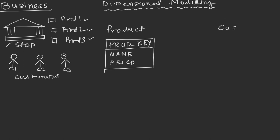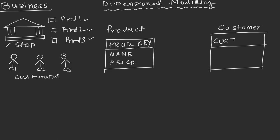Similarly, we can have a customer dimension table. Just like the product dimension table, it will have a customer key as the primary key. Then all the usual customer-related attributes will be there — for example, customer name, date of birth, gender, or whatever information we want to capture about the customer.